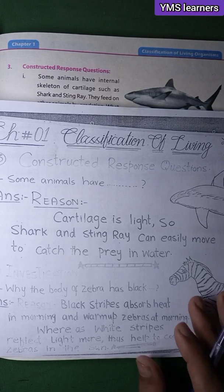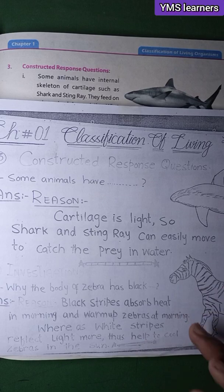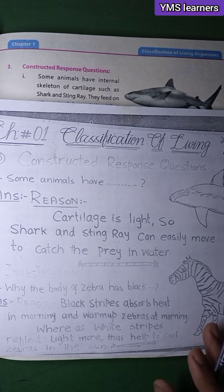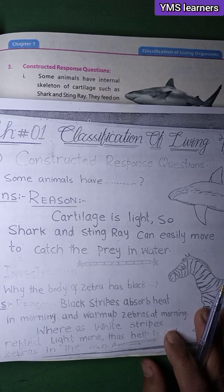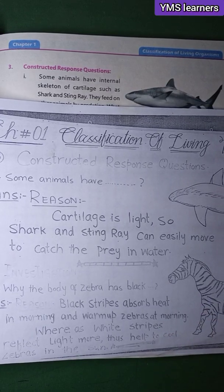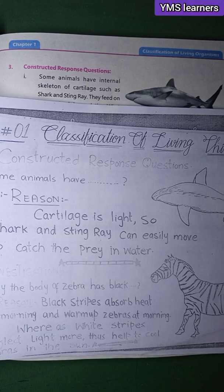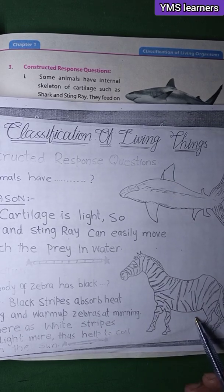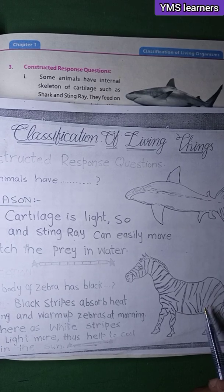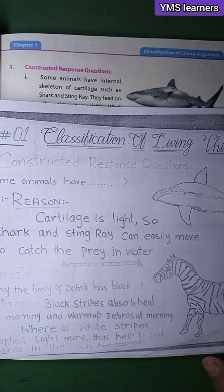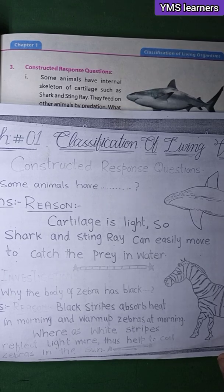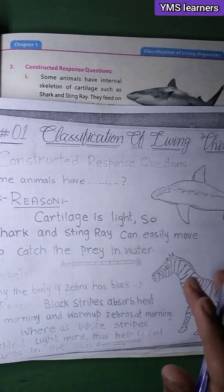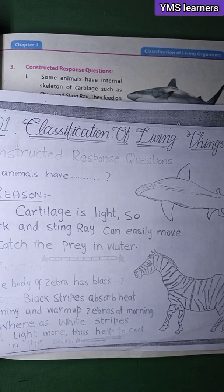The black lines absorb light and the white lines reflect light, helping regulate the zebra's body temperature. The reason is explained before you start to answer.